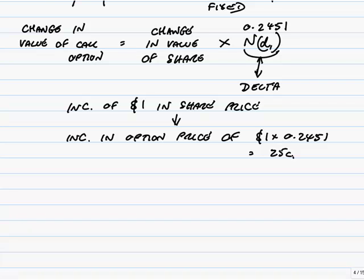It says Martin owns 1,000 shares. The share price is currently $1.50. And it says devise a delta hedge to protect against changes in the share price. What Martin's going to be worried about is that the share price might fall.